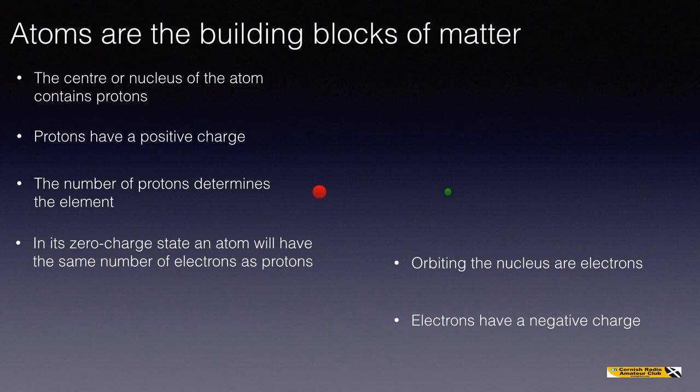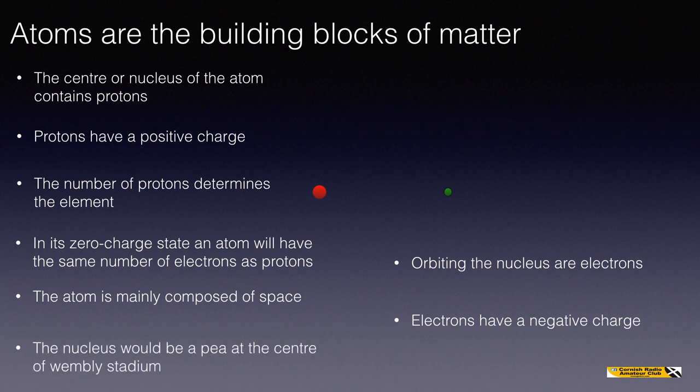Now, the atom is mainly composed of space. The distance between the small proton and the even smaller electron is very, very big. And an analogy that's been used is if the nucleus was the size of a pea at the centre of Wembley Stadium, then the electrons would be orbiting around the perimeter of the stadium and would be so small as to be invisible.